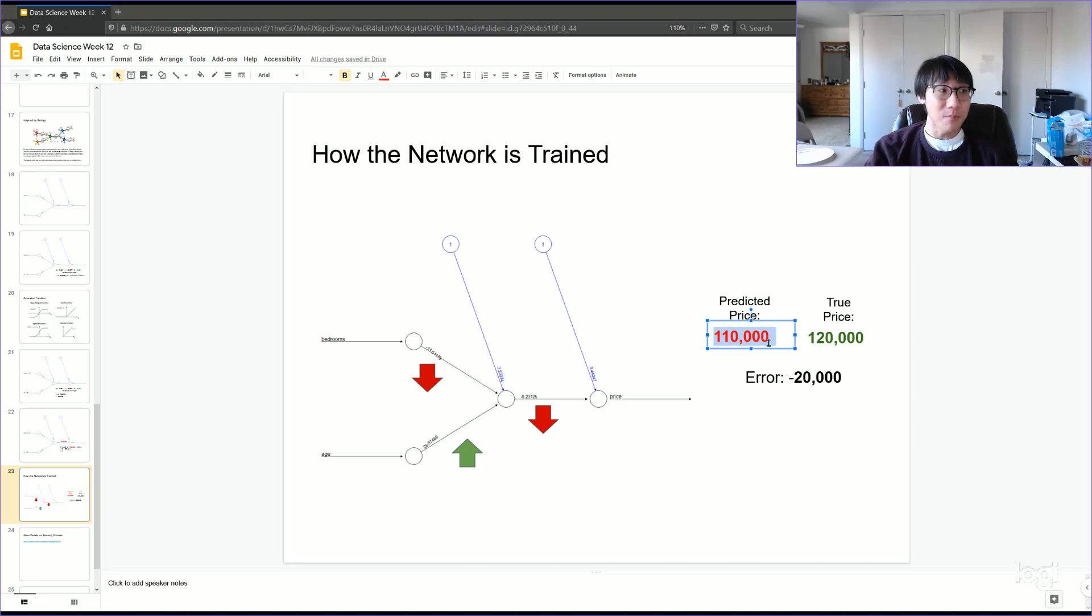Well, that would be a lot better. That would decrease the size of our error down to 10,000. And if we were to keep going with this process, nudging the weights, nudging the weights, nudging the weights, we would eventually get the correct prediction or something very close to a correct prediction out of this neural network.